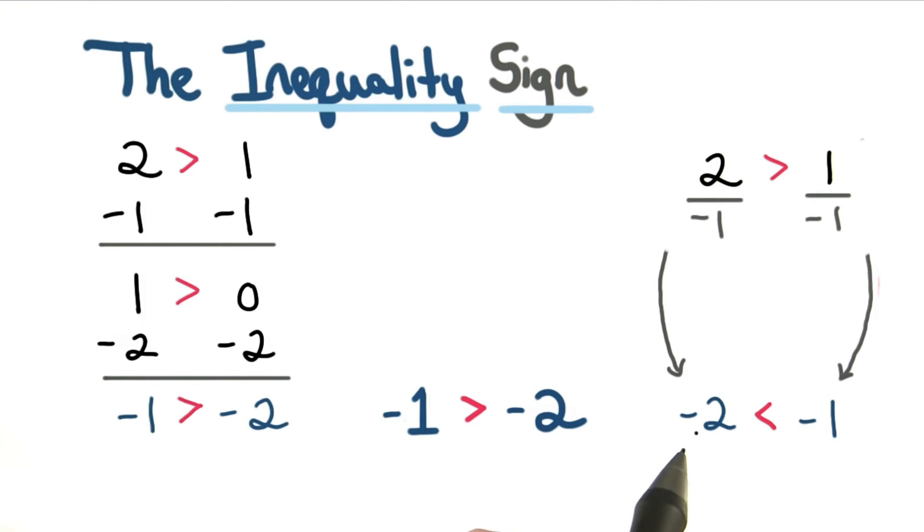These inequalities might look different, but they're actually equivalent statements. Here I have negative 1 is greater than negative 2, and here I have negative 2 is less than negative 1. If we flip this entire inequality, we can see that we wind up with the same thing.